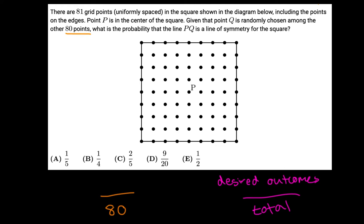Next, to find the desired outcomes, what I would start to do is just draw out the different lines of symmetry for the square and see how many points fall on those lines and how many points will meet the criteria of falling on a line of symmetry.